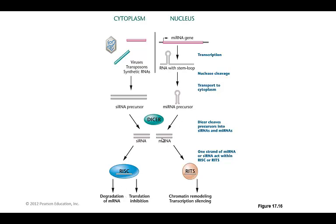If the miRNA came from within the cell itself, you can get things like chromatin remodeling, transcription silencing, and so on. This process is very widely used now in molecular biology to specifically target or silence genes that you want to study. All you have to do is introduce double-stranded RNA for that particular gene, and the cell will turn off not only the gene you introduced but all other copies of that gene within the cell.